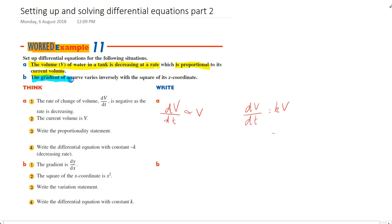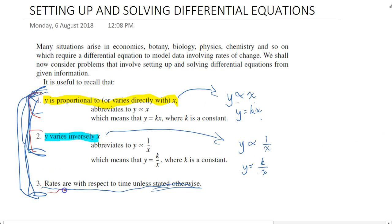And then the second question: the gradient of a curve varies inversely with the square of its x coordinate. So there's a lot here. The gradient of a curve varies inversely with the square of its x coordinate. Okay, so let's go through this step by step. The gradient of a curve isn't going to be like dV/dt now. It's not even going to be t, which is sort of what it says here - with respect to time if otherwise stated. This is one of those otherwise stated. The gradient of a curve is going to be simply dy/dx.